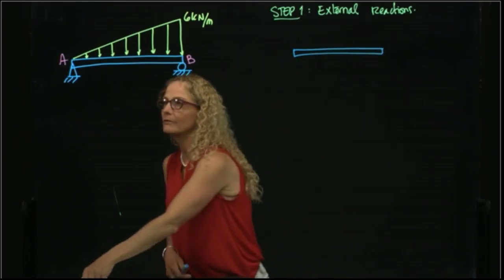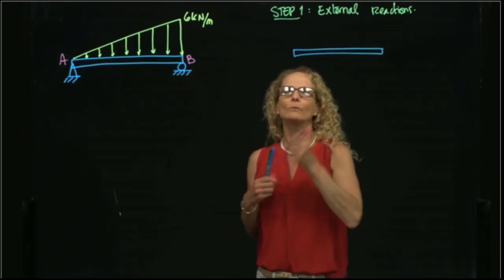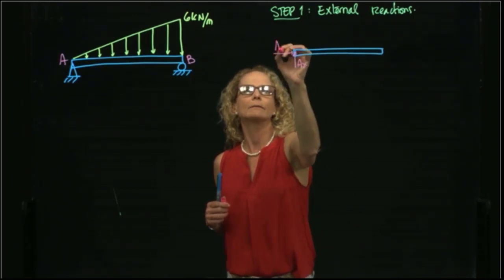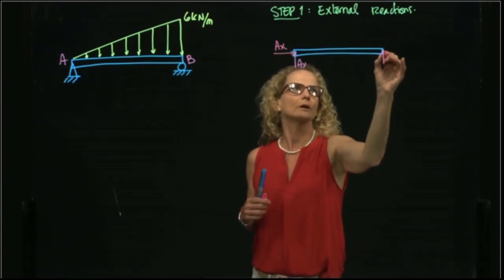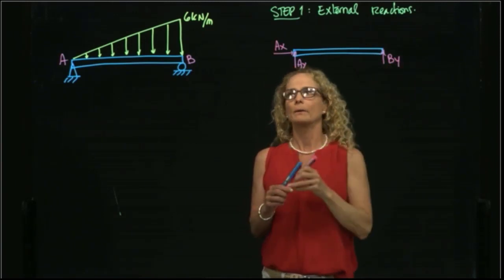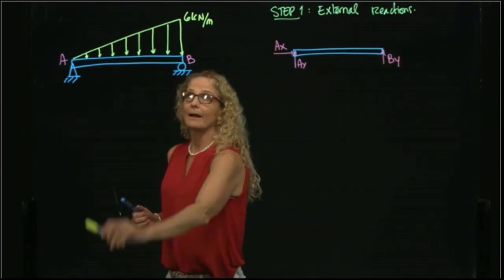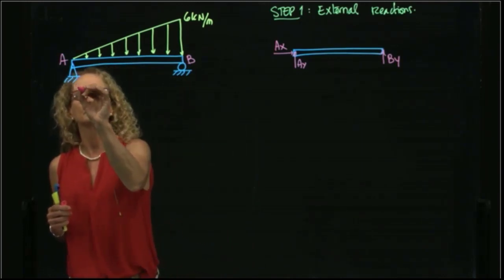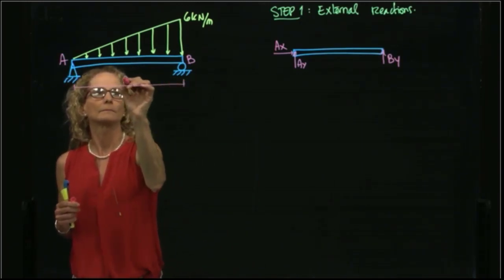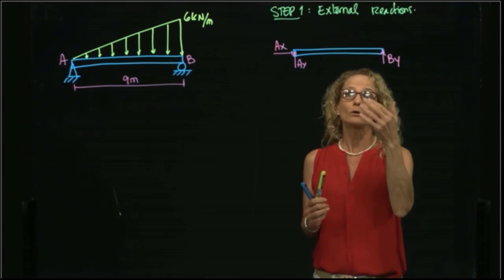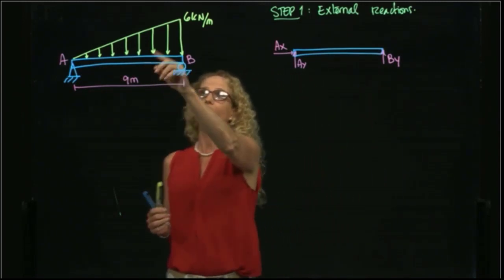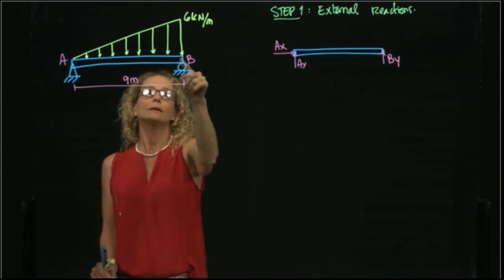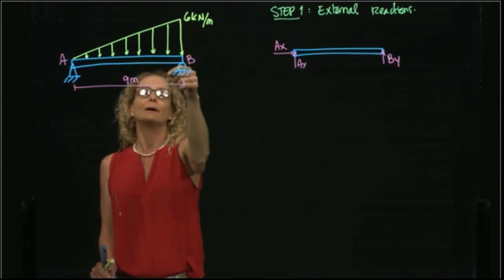Since we have a pin at A, we have two reactions at A: AY and AX, and we have one reaction at B, BY. Then I will write my distributed load. I will place it as a concentrated load. The concentrated load is the area under the curve, so we know that it's base, which is 9, times height, which is 6, divided by 2.